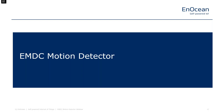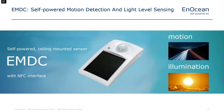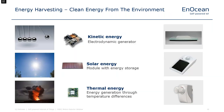Let's look at our latest product, the EMDC motion detector. EMDC is a self-powered, ceiling-mounted sensor that measures motion and illumination and can be configured with an NFC interface. Looking at the picture: the large black area is the solar cell that harvests energy from the environment; above that to the left is a light level sensor; and the large white element is the infrared lens.